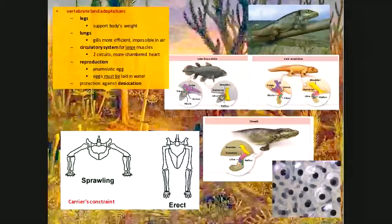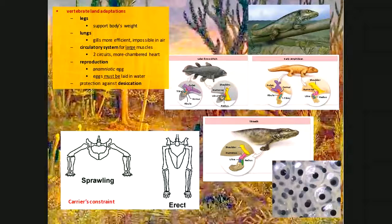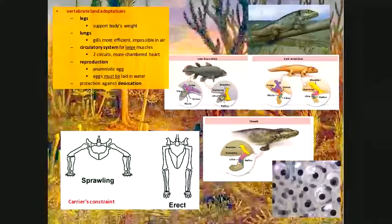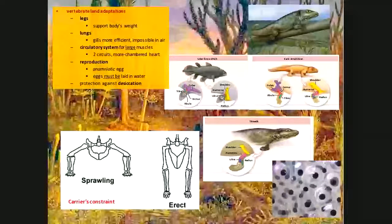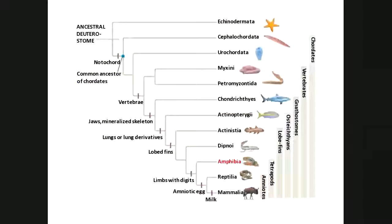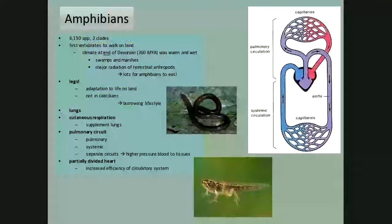Ichthyostega was the critter that bridged the gap between life fully in the water and life fully on land. It was one of the first early amphibians. As you can see in the lower right, amphibian eggs are tied to the water — they are anamniotic eggs, which we'll talk more about when we discuss the reptiles.